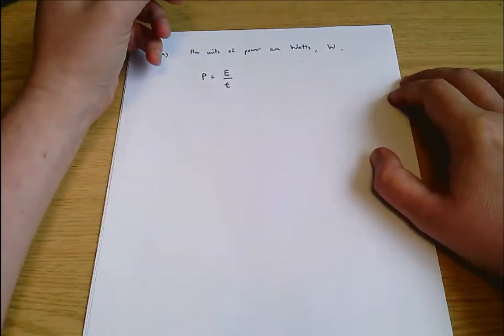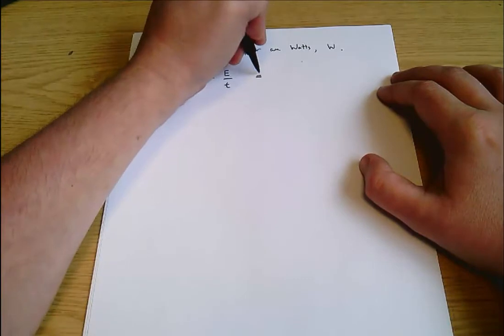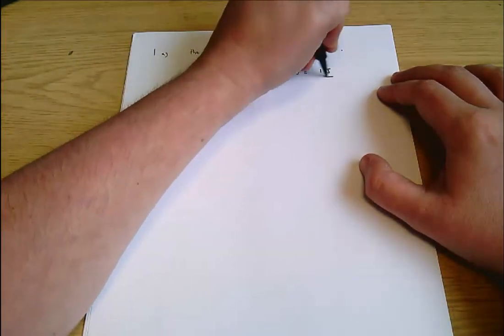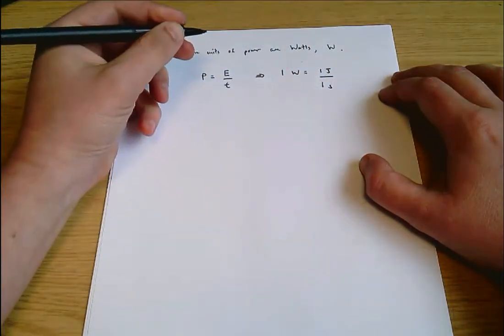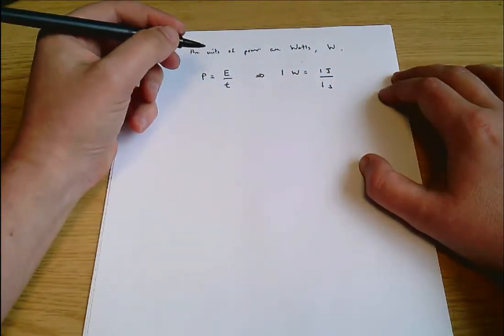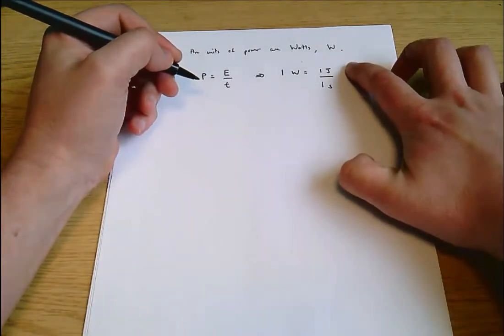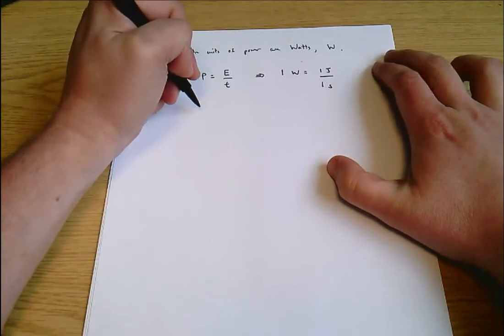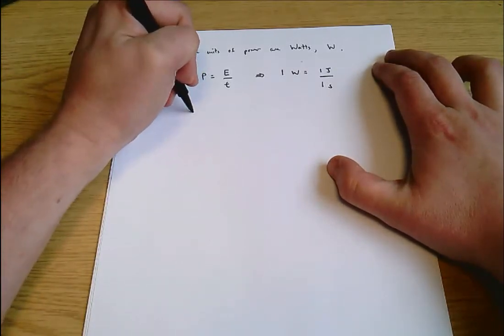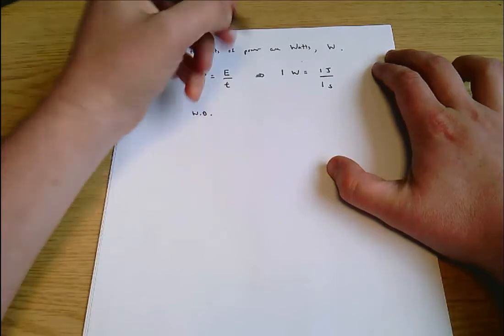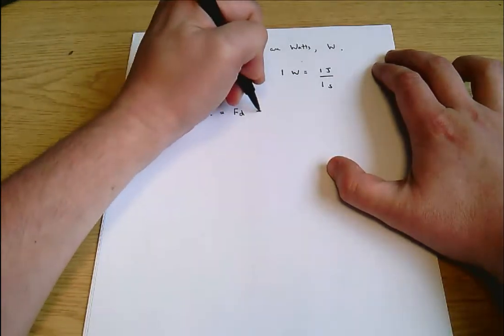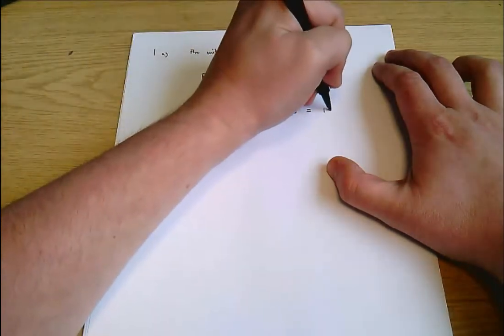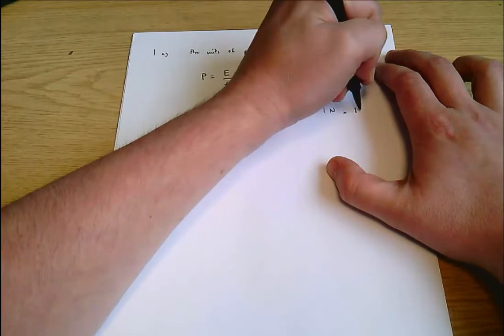That will mean that one watt equals one joule divided by one second. Now we need to work out how to express a joule in terms of kilograms, meters and seconds. For that we need something about energy. Energy is work done, which equals force times distance. Therefore one joule equals one newton times one meter.